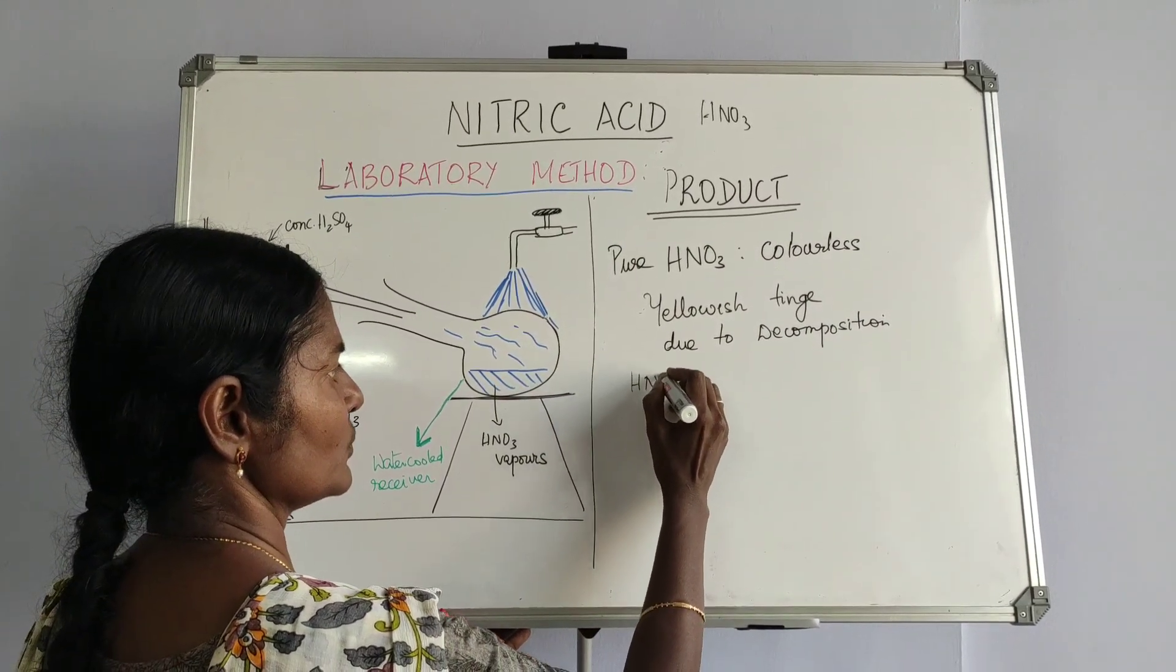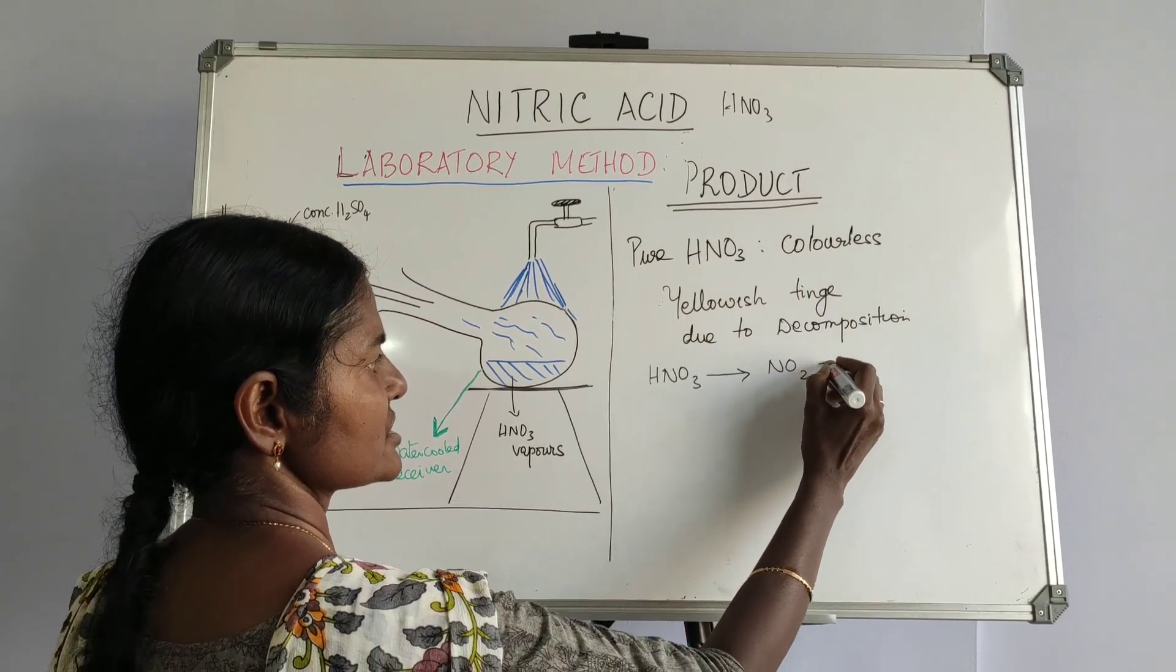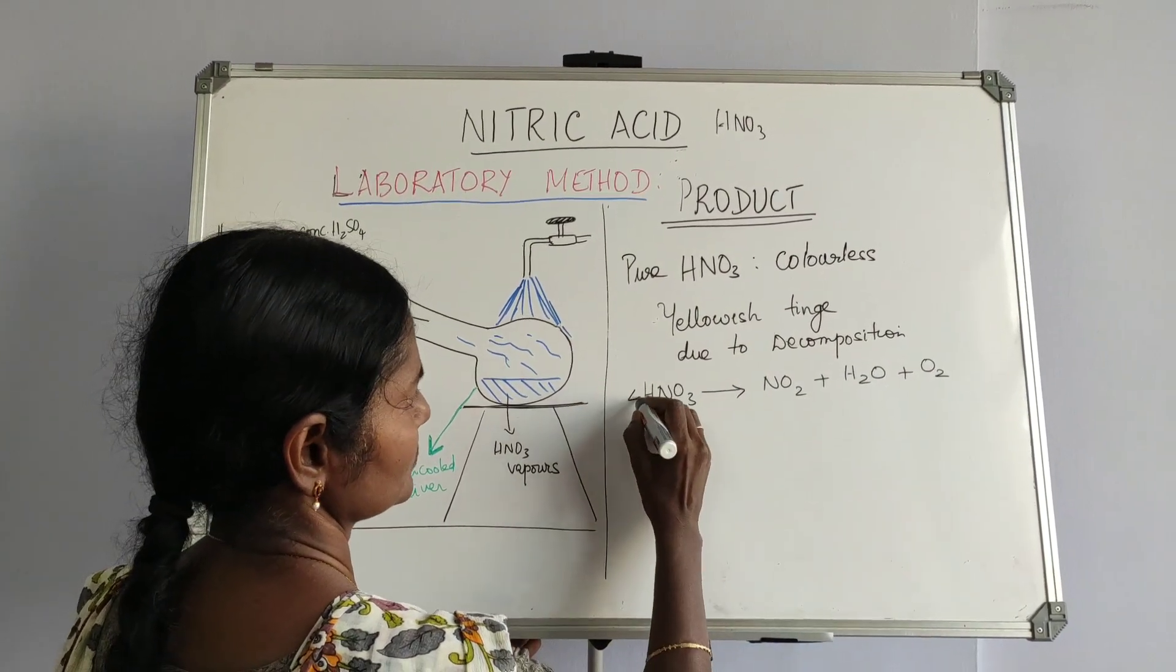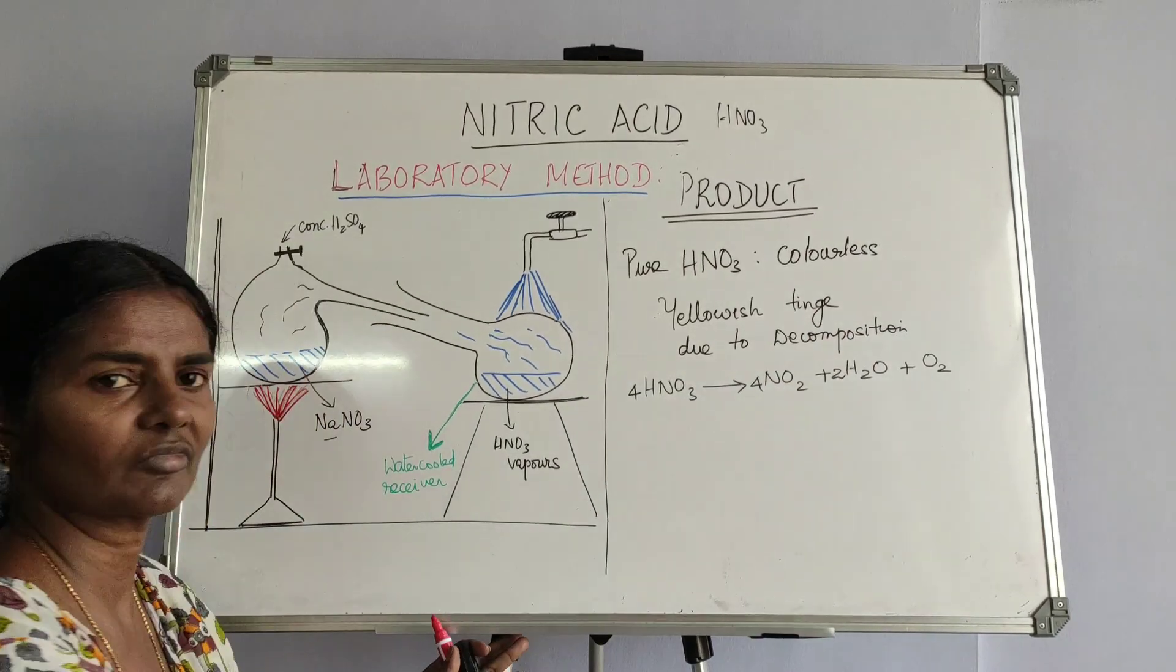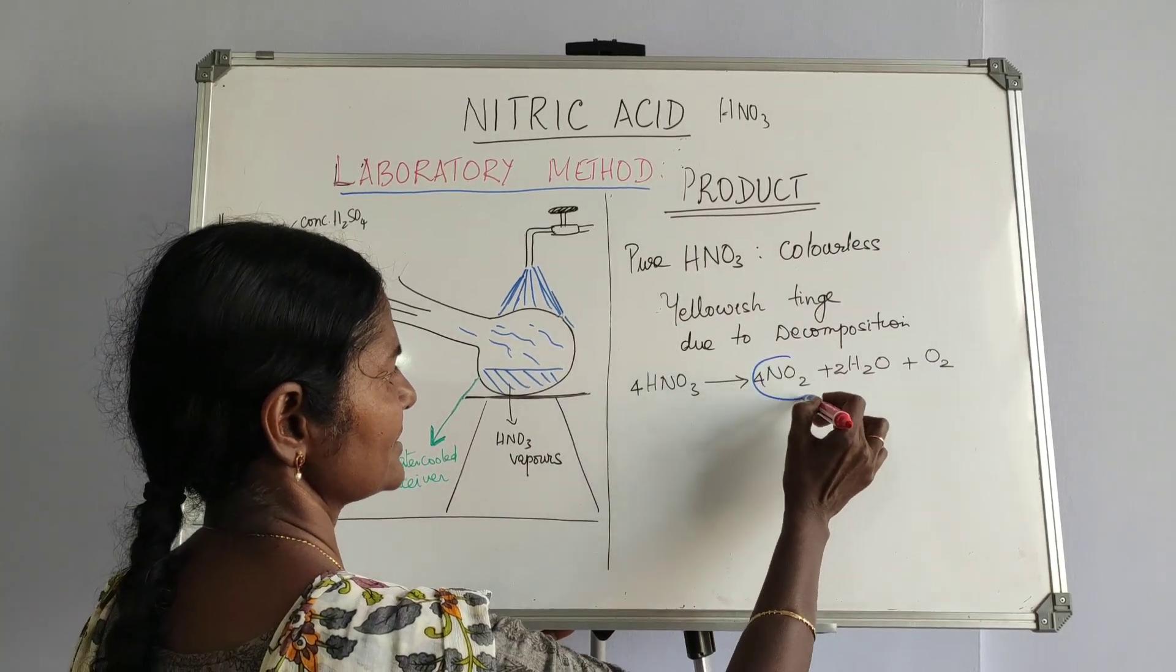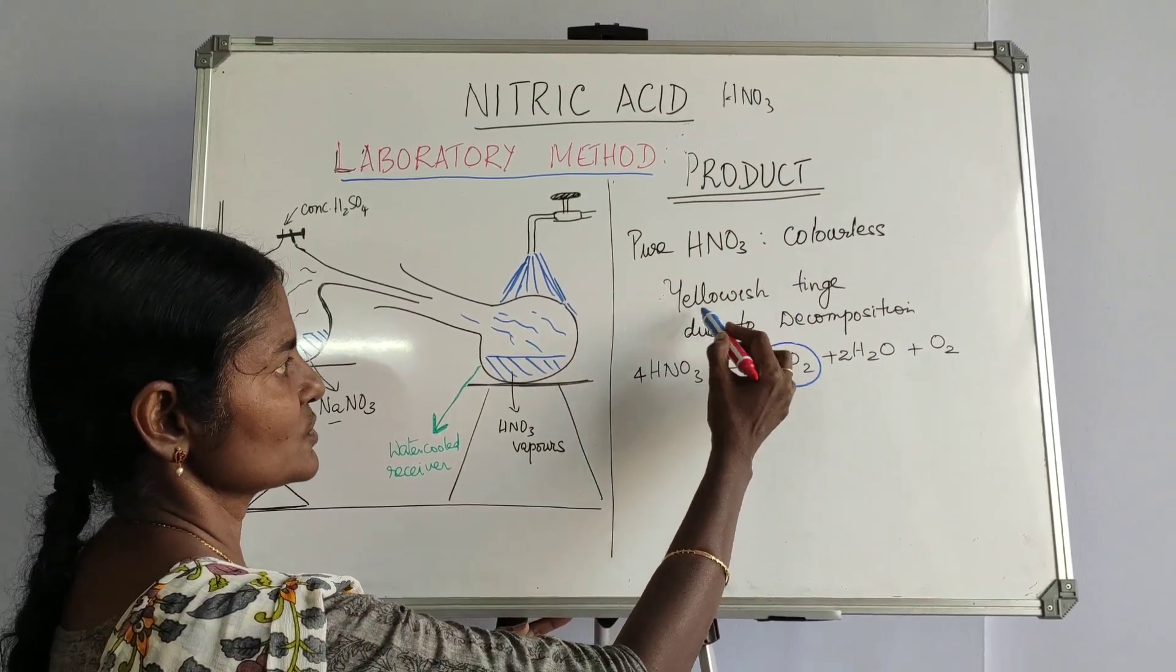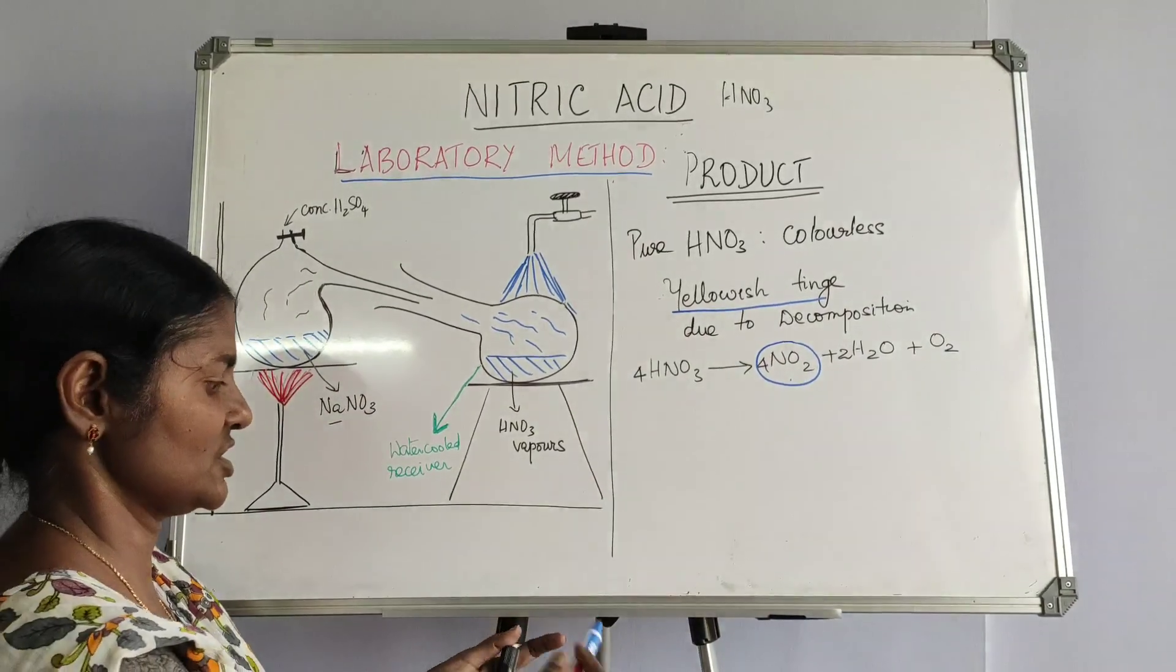And so nitric acid decomposes to give you nitrogen dioxide plus water plus oxygen. So the things that are actually formed are nitrogen dioxide, which is reddish brown. And when this mixes with water, it gives you this yellowish tinge. So this is responsible for the yellowish tinge. So how to remove this?